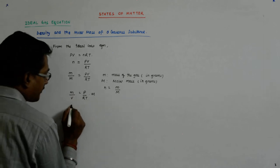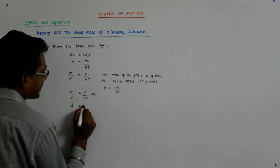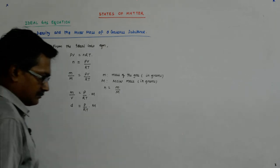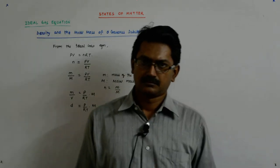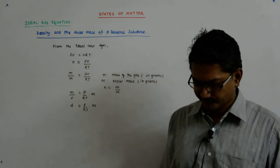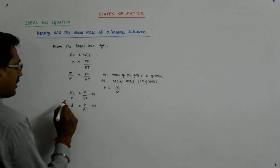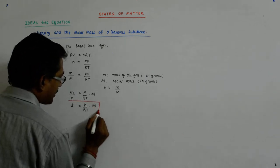Now m upon V is density. So density is equal to PM upon RT. Now it gives you a very important conclusion.